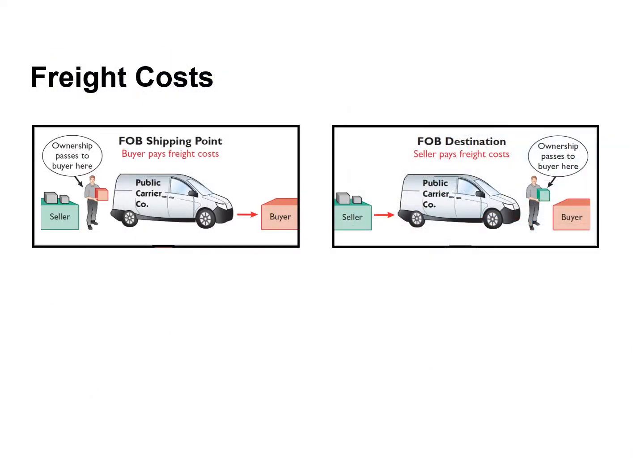The sales agreement should indicate who — the seller or the buyer — is to pay for transporting the goods to the buyer's place of business. When a public carrier, like a trucking company, transports the goods, the carrier prepares a freight bill in accordance with the sales agreement. Freight terms are expressed as either FOB shipping point or FOB destination.